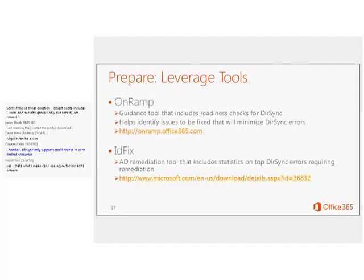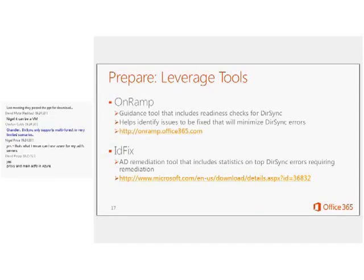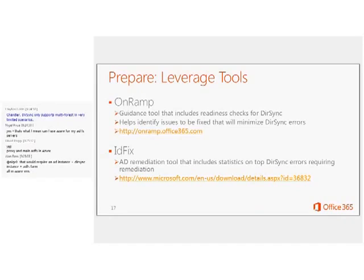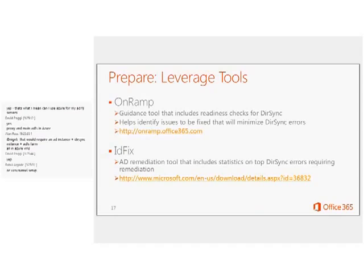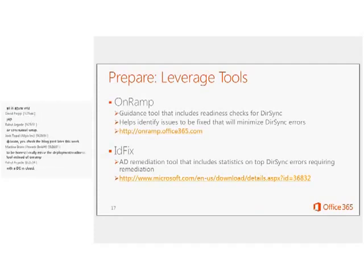I wanted to point out some useful tools. The On-Ramp tool at on-ramp.office365.com provides a lot of good guidance on onboarding to Office 365 and has specific questions, suggestions, and checks for DirSync — definitely leverage that. We also have IDFix, which allows you to evaluate your on-premises objects, point out objects that will not work when synchronizing to the cloud, and can actually remediate many of those problems for you. I encourage you to check out IDFix — the download link is available in the resources.